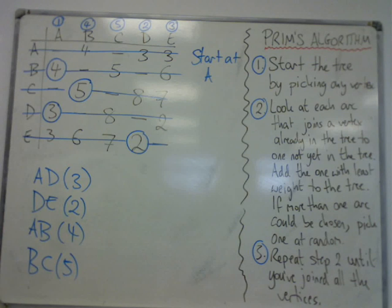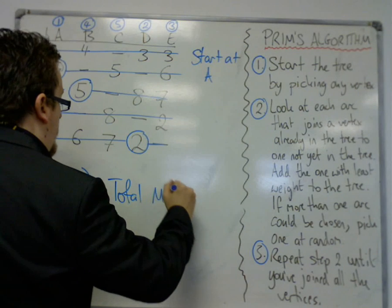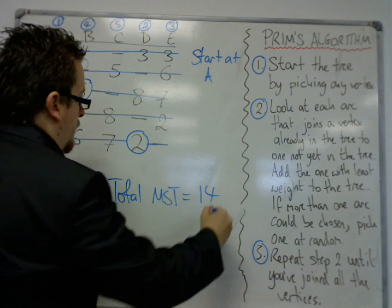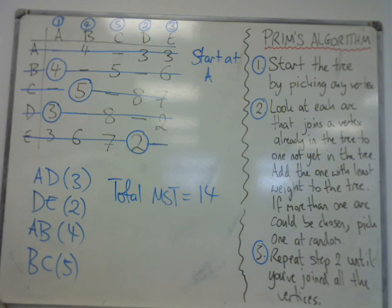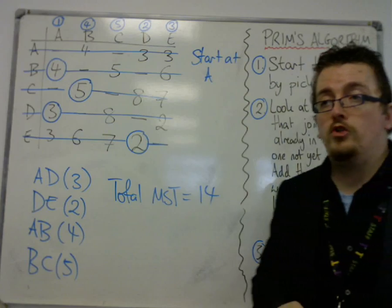So, 5 vertices, 4 edges, so the total of the minimum spanning tree is 5, 9, 14. And that's how we can use Prim's on a matrix in order to find the minimum spanning tree.